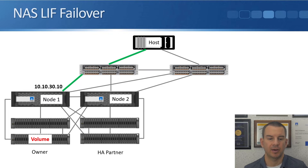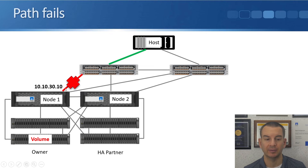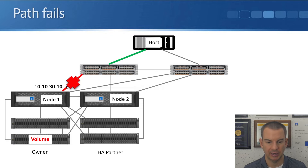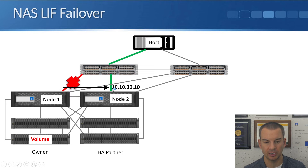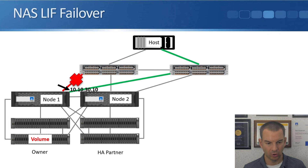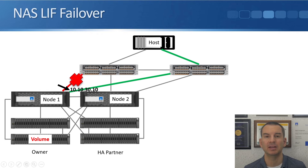Looking at the example here, we've got a host connecting in on a logical interface with IP address 10.10.30.10. If the port that that logical interface is on goes down, it will failover to another port — either the port on the right, taking its IP address 10.10.30.10, or to another port here. When that happens, the switch will learn that the logical interface has moved. The host still keeps connecting on the same IP address — it's completely transparent and does not know that anything happened.